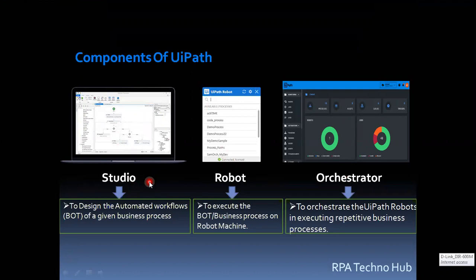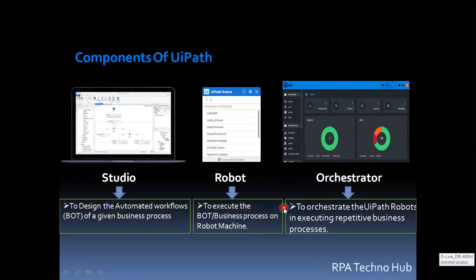Studio is a graphical user interface used to design the automated workflows of a given business process. The automated workflows can be called a bot. Robot establishes a connection between your machine and Orchestrator. Once the connection is established, your machine can be called a robot machine. Robot acts like a listener and listens to the commands passed from Orchestrator to execute the business process on the robot machine.